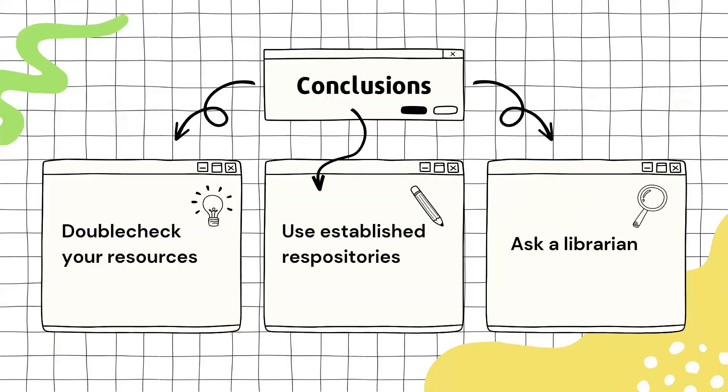Here are my top three tips for success in finding OERs: double check your resources, use established repositories, and ask a librarian. Double checking your resources is as easy as taking a look at the material or the page where you find it and making sure you haven't missed copyright information or a Creative Commons license that would affect how you can use the item. If you look for resources in the wild just doing a Google search, this is probably already second nature to you. It's a good habit and a great way to be a responsible digital citizen.